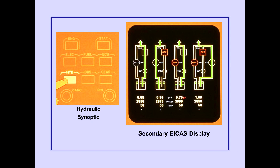Pushing the hydraulic synoptic switch on the ICAST display select panel displays the hydraulic synoptic on the secondary ICAST display. The display provides real-time information about the status of the various hydraulic power sources, quantities, and control valves.